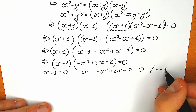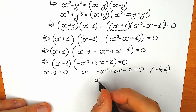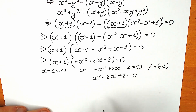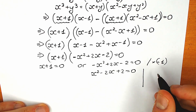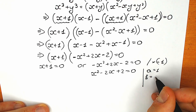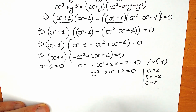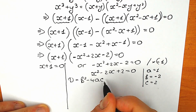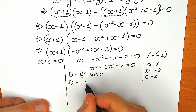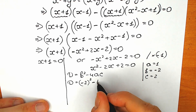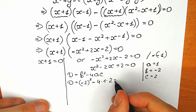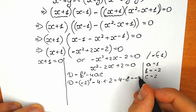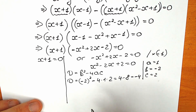Let's multiply both sides by minus 1, giving x squared minus 2x plus 2 equals 0. Our coefficients are a equals 1, b equals minus 2, and c equals 2. The discriminant equals b squared minus 4ac equals (minus 2) squared minus 4 times 1 times 2 equals 4 minus 8 equals minus 4. Our discriminant is negative, which tells us we have complex roots.